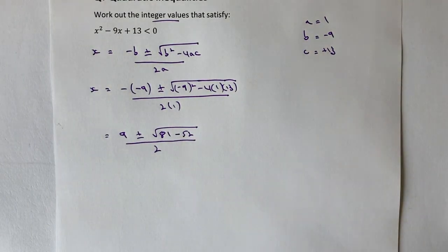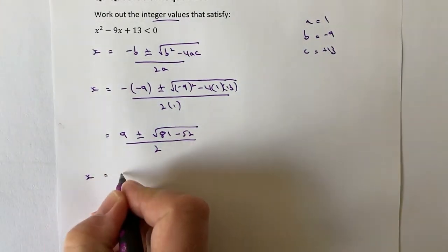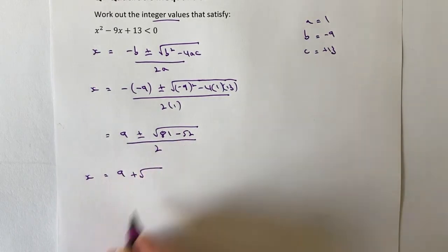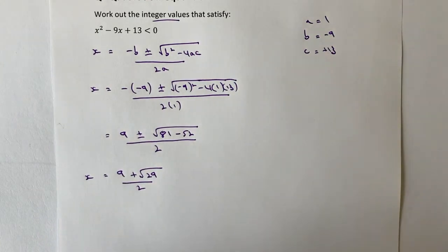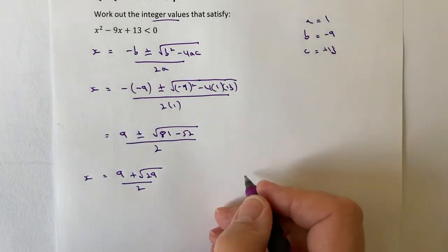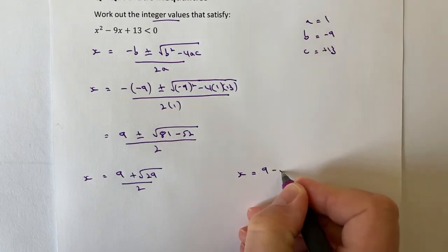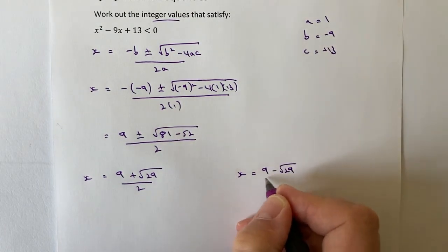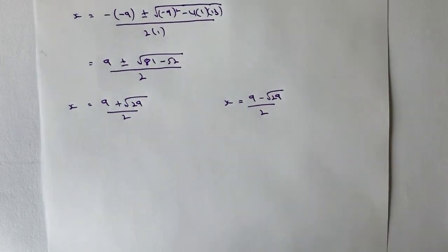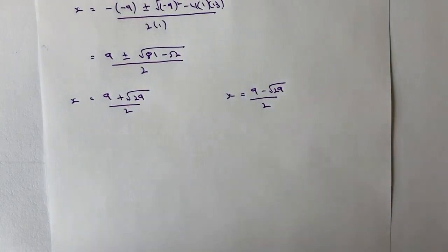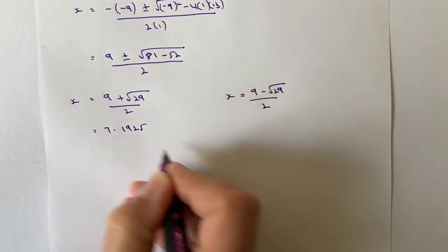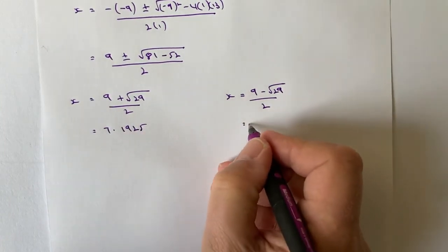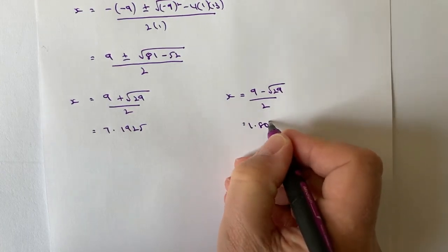I'm in a position now where I can get my two values of x. My first value of x is 9 plus the square root of 81 minus 52, which is 29, all divided by 2. My second value of x is 9 minus the root of 29, all divided by 2. If I pop that into my calculator, I get 7.1925 and x equals 1.8074.